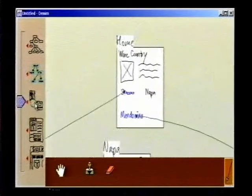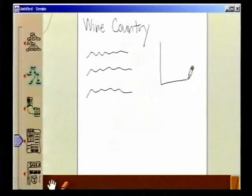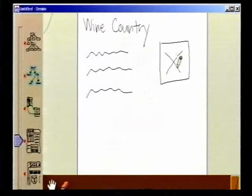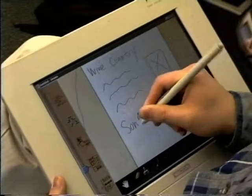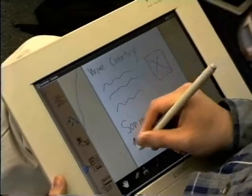Denim addresses these issues by integrating the different levels through zooming, using sketching as its primary interface, and focusing on pen interaction as the primary input mode. We will demonstrate these features by going through a simple scenario.